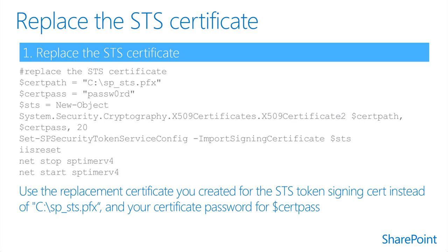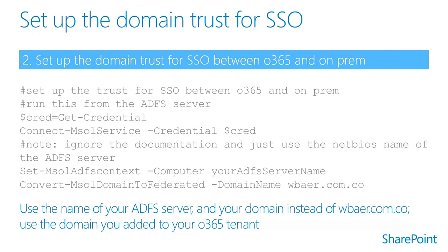Self-signed certificates are best for test and/or pilot deployments. Each domain that you want to federate must either be added as a single sign-on domain or converted to be a single sign-on domain from a standard domain. Adding or converting a domain sets up a trust between ADFS and Windows Azure Active Directory. If you are using a subdomain such as corp.contoso.com, in addition to a top-level domain such as contoso.com, you must add the top-level domain in your cloud service before you add any subdomains. When the top-level domain is set up for single sign-on, all subdomains are automatically set up as well.